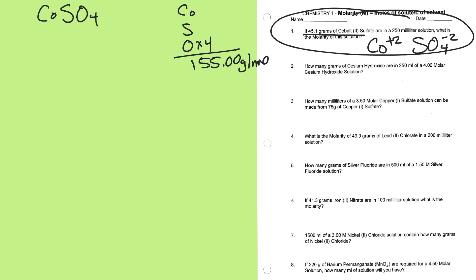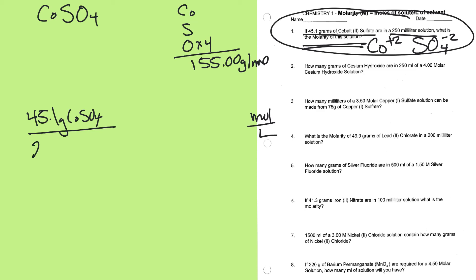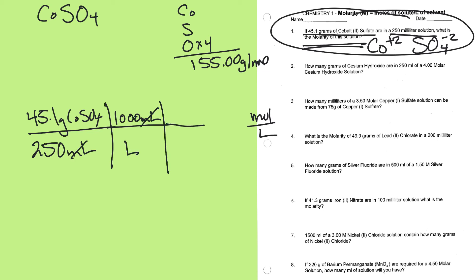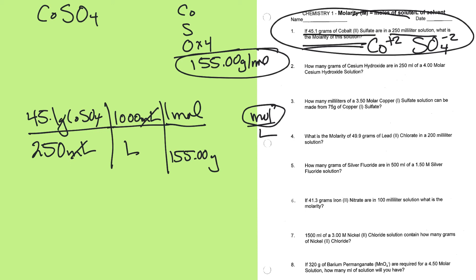If I want a double unit, I start with a double unit: 4.5 grams of cobalt sulfate over 250 milliliters. I need volume in liters, so I convert milliliters to liters — now liters is on the bottom. To get to moles I use the molar mass, putting the mass on the bottom and one mole on the top. My grams cancel, my milliliters cancel, and I have moles per liter. You should be able to do the math on that yourself.